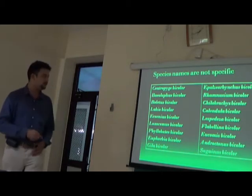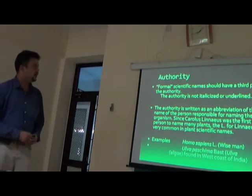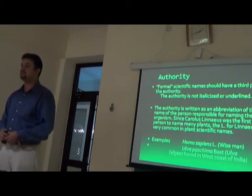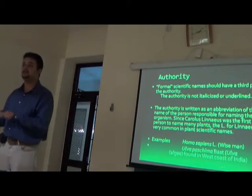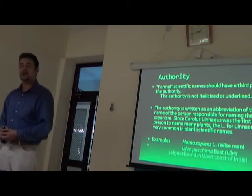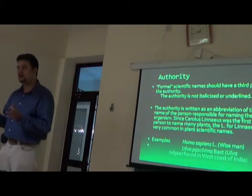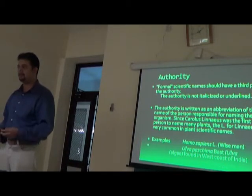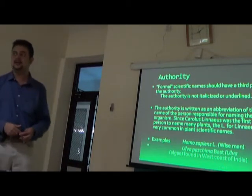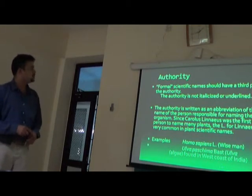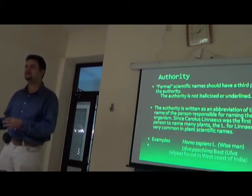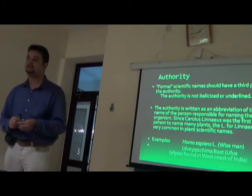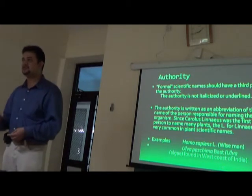Most binomial or scientific names have a third or sometimes fourth part called the authority. The authority is not italicized in print, and not underlined in handwriting. The authority is the person who first described the species — not just identified it, but formally described it for the first time.